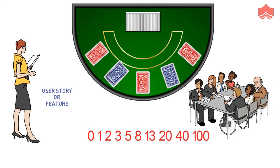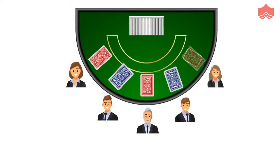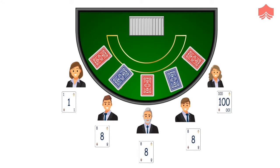The term estimators means the whole team. The estimators discuss the feature to clearly understand all of its aspects. When they are done with discussing the features, each estimator privately selects one card to represent his or her estimate. All cards are then revealed at the same time. If the value selected by all the estimators is the same, then that value becomes the estimate for the story.